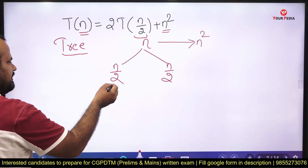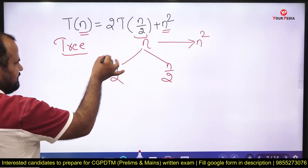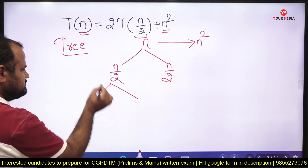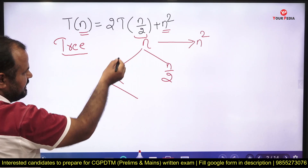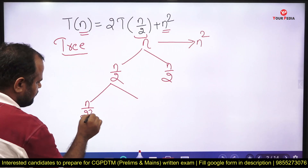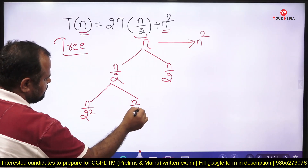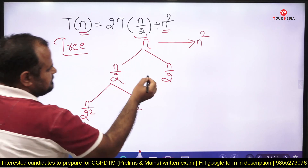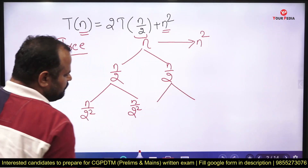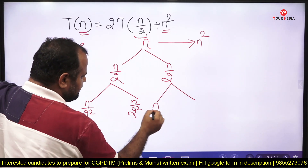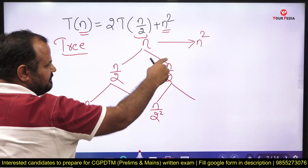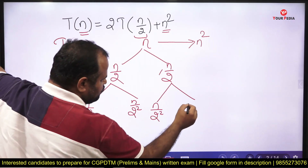At the next level, the input size is n/2. For the left sub-problem of size n/2, we divide again into two parts each of size n/2 divided by 2, which is n/2². Similarly the right sub-problem is also of size n/2, so dividing it also gives n/2² on each side.